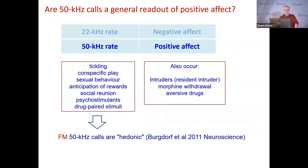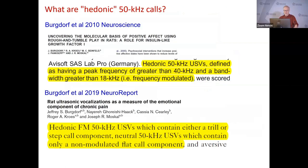So given that these calls are heterogeneous, Jeff came up with the idea that it was actually a subset of 50 kHz calls — the frequency modulated ones — that were hedonic. How do we define that exactly? Here I've picked out from a couple of Jeff's papers. I'm not sure these verbal descriptions are quite the same or whether it's shifted over time — we can talk about that later.